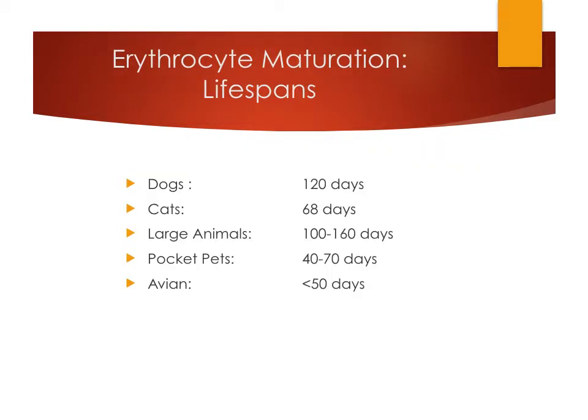Here's a slide on the lifespans of red blood cells across species. Dog RBCs last about 120 days; cat RBCs about 68 days. Large animals range from about 100 to 160 days. Pocket pets have a very short lifespan of 40 to 70 days, and avian RBCs are even shorter — less than 50 days. This constant turnover means erythropoietin must be continuously released to stimulate bone marrow production.